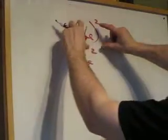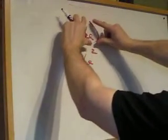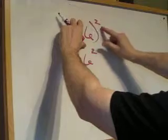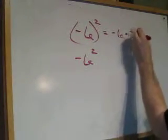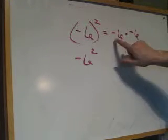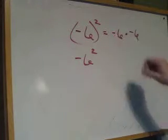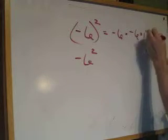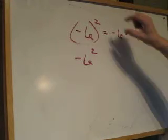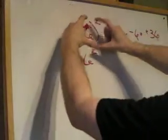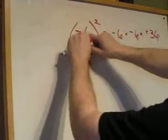And there is a marked difference between those two. This here says everything in the parentheses I'm going to square. So this is negative 6 times negative 6. And remember, two negatives, even number, is going to give me a positive. 6 times 6 is 36. So this says everything in the parentheses is going to be squared, including the negative.